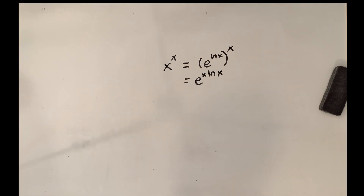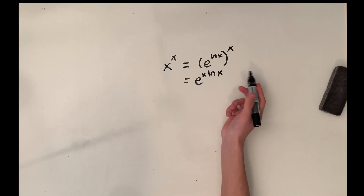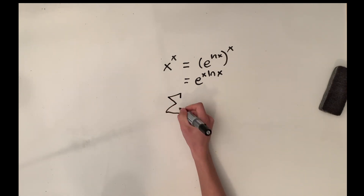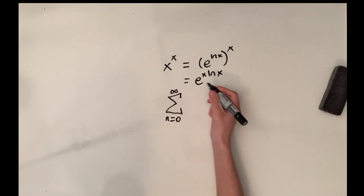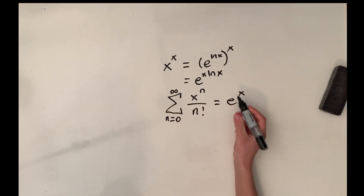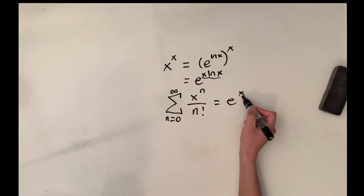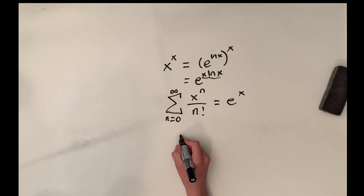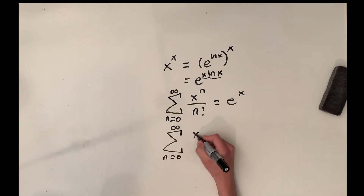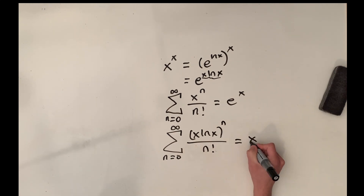Now we have a pretty standard Maclaurin series definition of e to the x, where the input is x·ln(x). That would be the sum from n equals zero to infinity of x to the n over n factorial, which equals e to the x. In this case, we've just changed our input to x·ln(x), and we can substitute that in for the series. So we have the sum from n equals zero to infinity of (x·ln(x)) to the n over n factorial, and that equals x to the x.